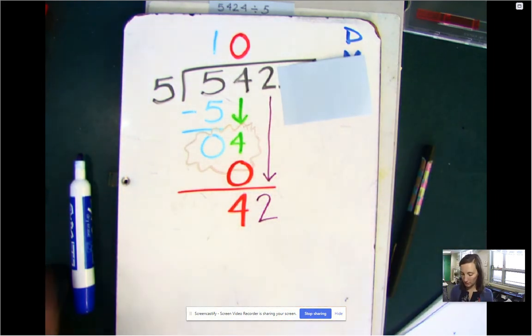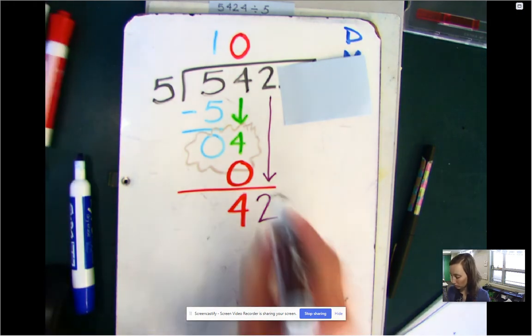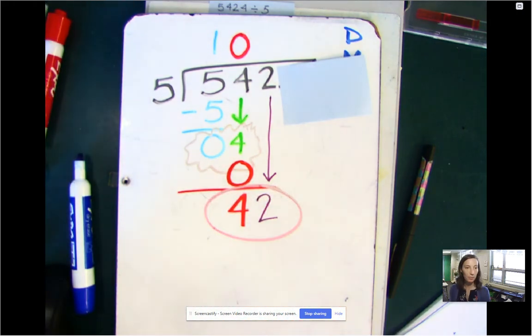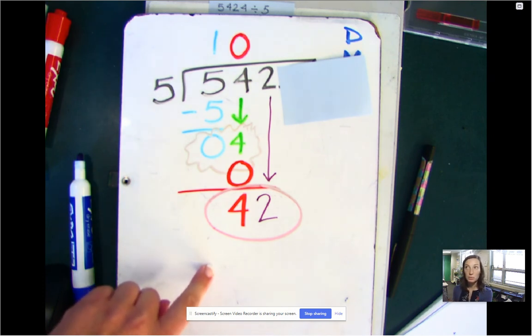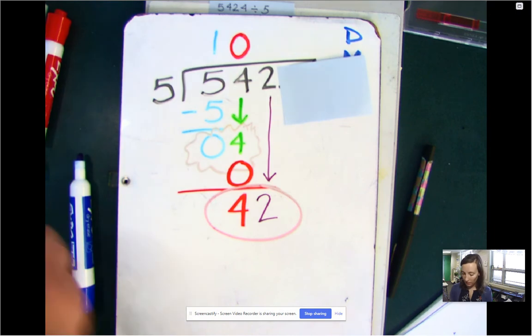Our next number is a two. So again, now this is our target number that we're talking about. So divide. How many times does five go into 42? Well, I know my fives facts and five times eight is 40. That's close. But if I go to the next one, five times nine is 45. That's too high. That's over 42. So that doesn't work. So we go with five.